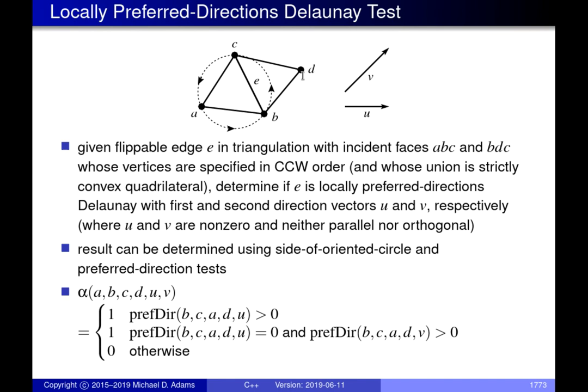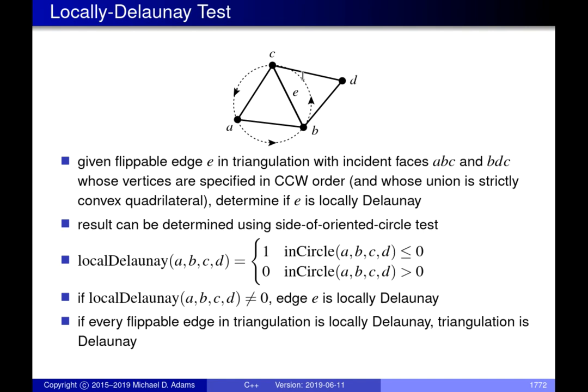This is effectively what we were doing in the locally Delaunay test from the last lecture. The problem with that particular predicate is if we use it to generate a triangulation, the resulting Delaunay triangulation is not necessarily uniquely determined. So we want to eliminate this non-uniqueness and ensure the result is unique.